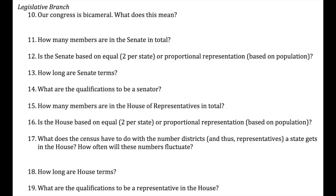Question number ten: Is Congress bicameral? That means there are two chambers or two houses — different ways to represent the people. The House acts as the people's body, while the Senate acts as a steadying influence on Congress. That goes back to the story about George Washington pouring his tea into the saucer to cool it — that's kind of what the Senate does, whereas the House is the direct line to the people. Number eleven: how many members are in the Senate? There are 100 — two per state. We started with 13 colonies, so 26, but now with 50 states the number is 100.